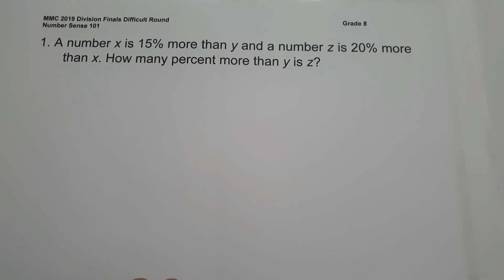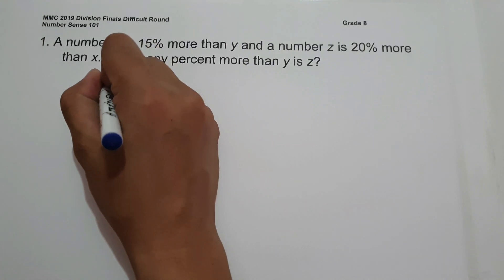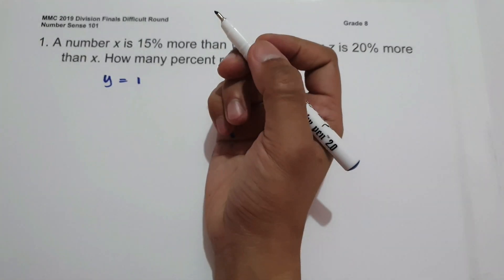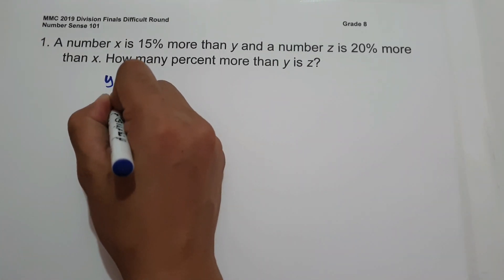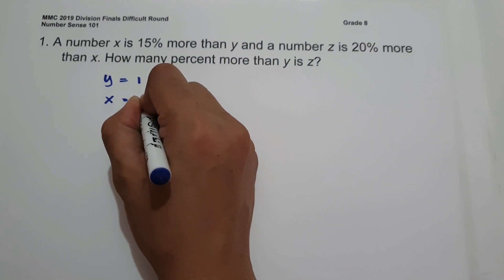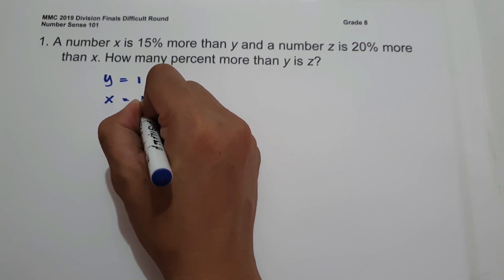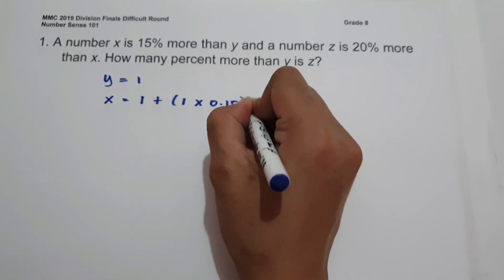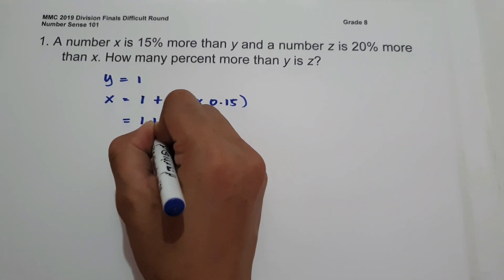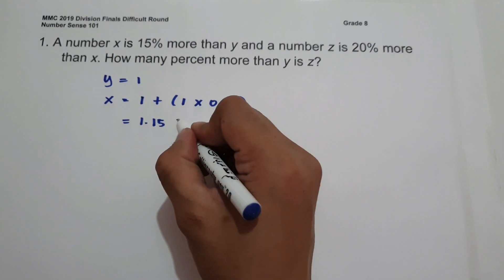On number 1, a number X is 15% more than Y and a number Z is 20% more than X. How many percent more than Y is Z? To answer this question, let us illustrate Y equals 1. If Y equals 1, what will be the value of X? X is 15% more than Y, so this is 1 plus 1 times 15%, that is 0.15, giving us 1.15. So this will be the value of X.